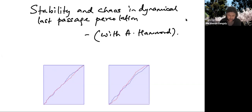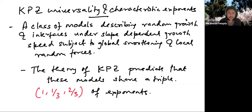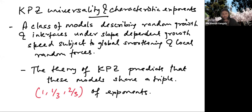We'll see what these figures mean eventually. So this is sort of an expert audience, so I don't have to go too much into it, but just to make sure everybody's on the same page. KPZ universality and accuracy exponents. We basically want to understand a class of random growth and interface models which have some common properties, like slope-dependent growth speed, and there's some global smoothing that typically happens in the presence of local roughening forces, giving rise to exponents given by the triple (1, 1/2, 2/3).